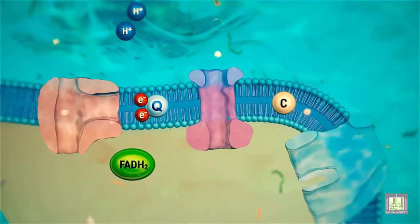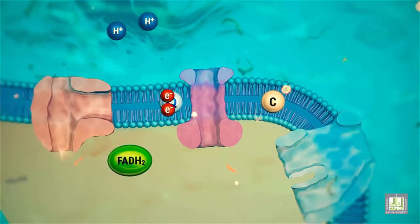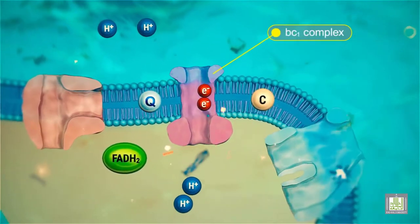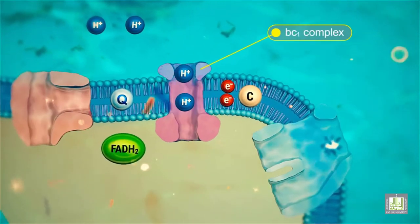As the electrons move from cytochrome to cytochrome down the electron transport chain, more protons are carried across the membrane.